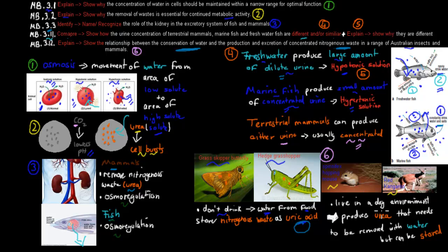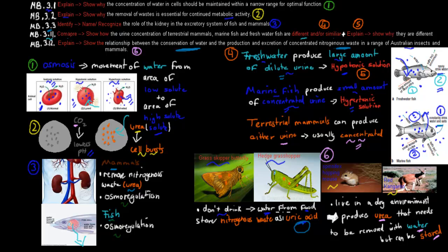Whereas the actual mammals — the spinifex hopping mouse and the red kangaroo — live in a dry environment but have a bit more water because they can drink. This means they can produce urea. Urea can be stored for a while, as opposed to ammonia which must be removed immediately. So they will lose some water when they urinate, but not as much as they would with ammonia. That's why they produce urea as opposed to ammonia — urea is for mammals and uric acid is for insects.